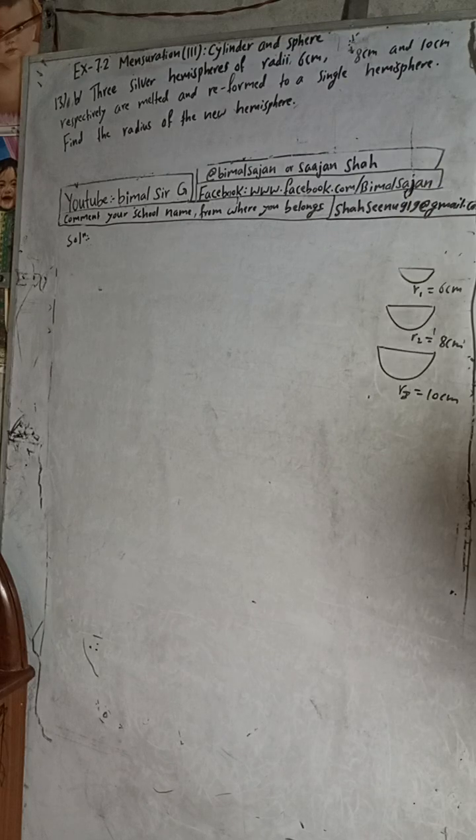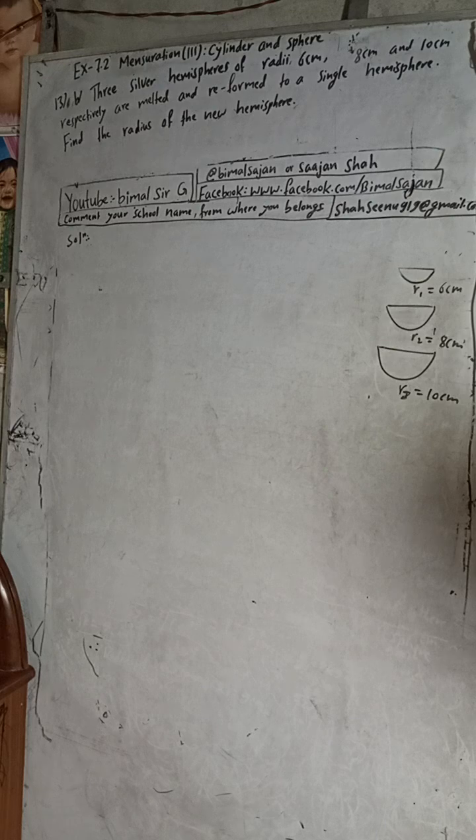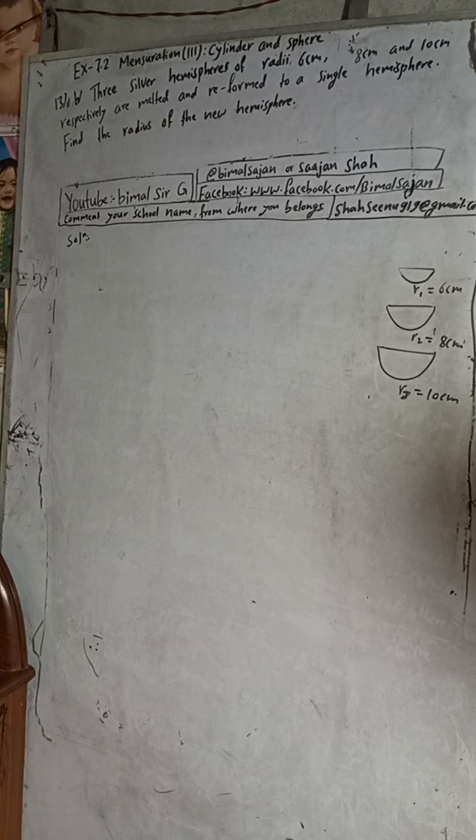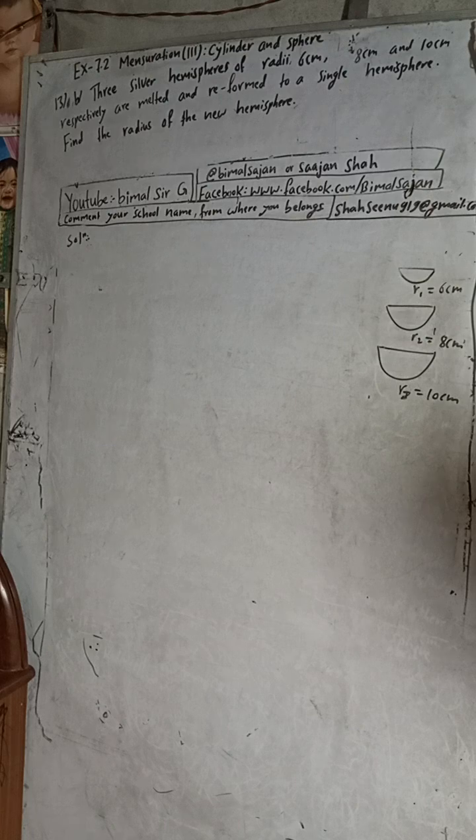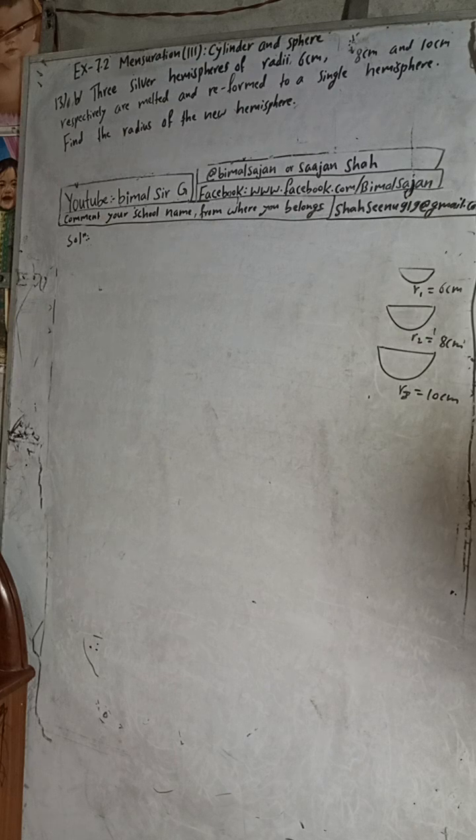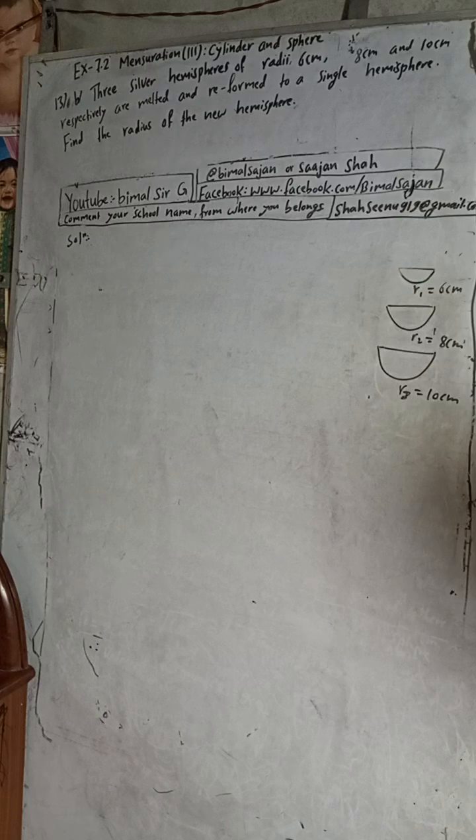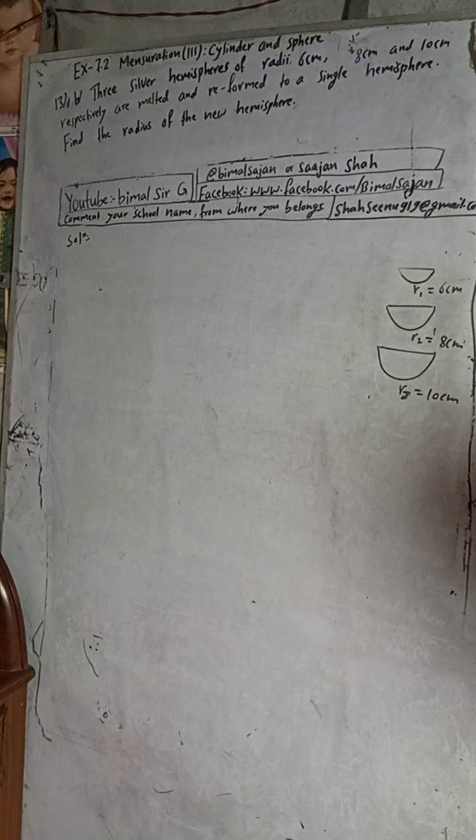Hi class 9 and 10 students, welcome back to Vimal Sarji YouTube channel. This is question number 13b, exercise 7.2 mensuration third part: cylinder and sphere, class 9 Vedanta Axial Mathematics. You can check the playlist for class 9 and 10 solutions of optional maths, compulsory maths and science. My TikTok and Facebook ID is in the video description. If you have subscribed, thank you, and if you haven't, please subscribe. It's totally free, just like and comment my videos.